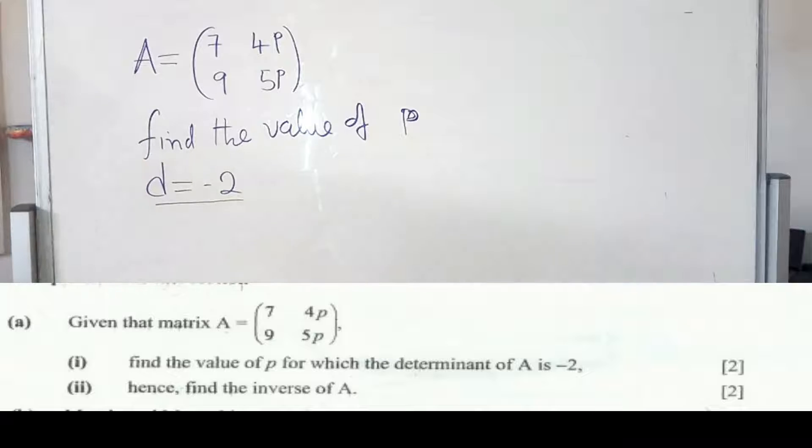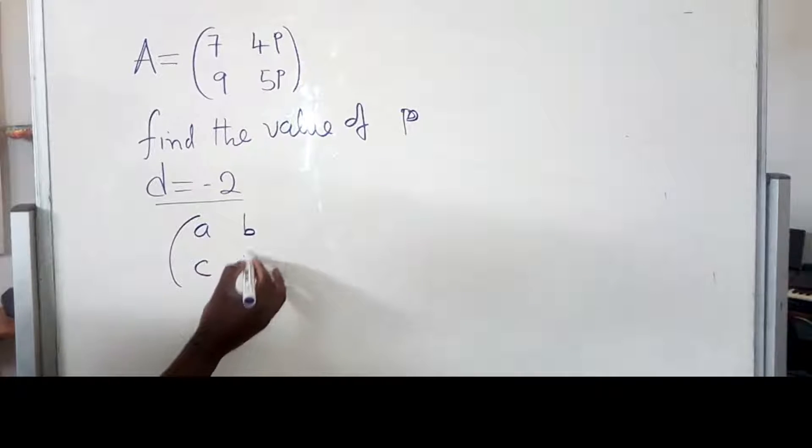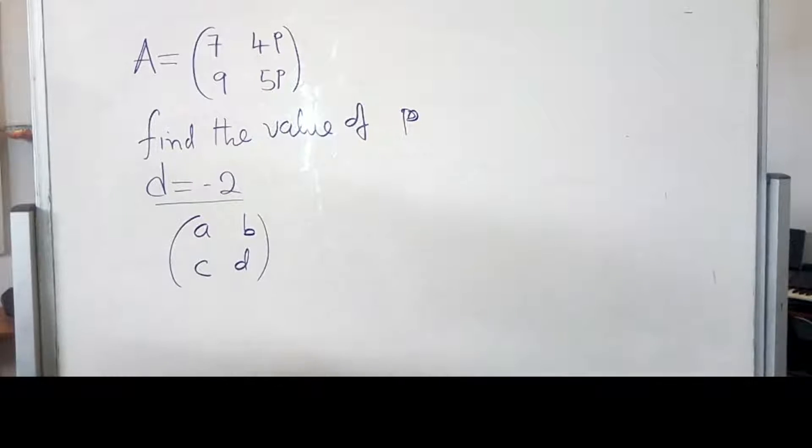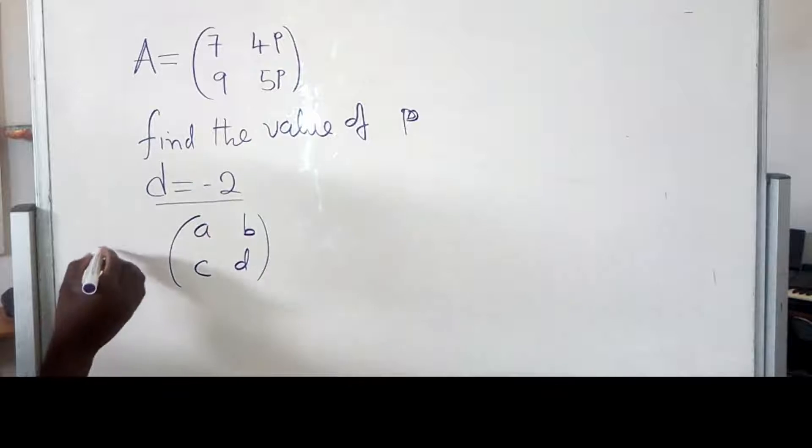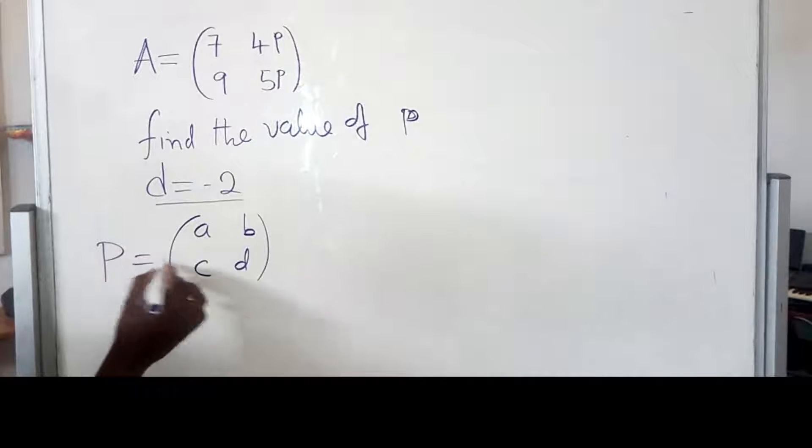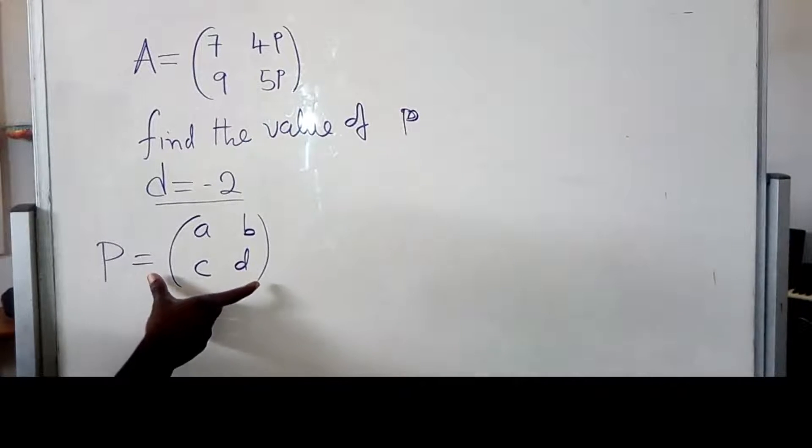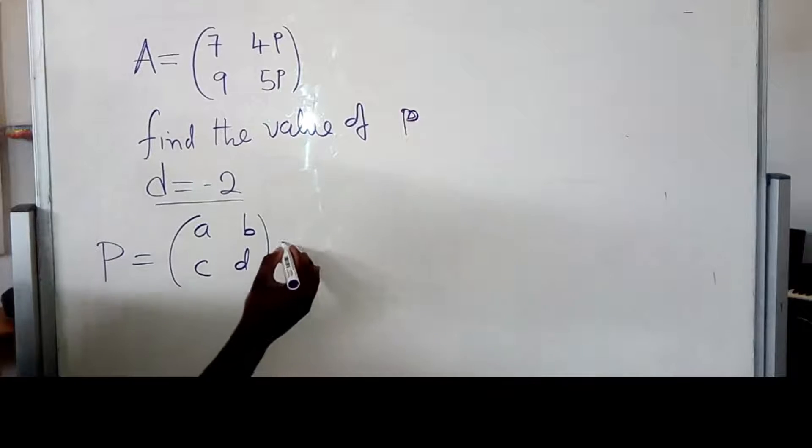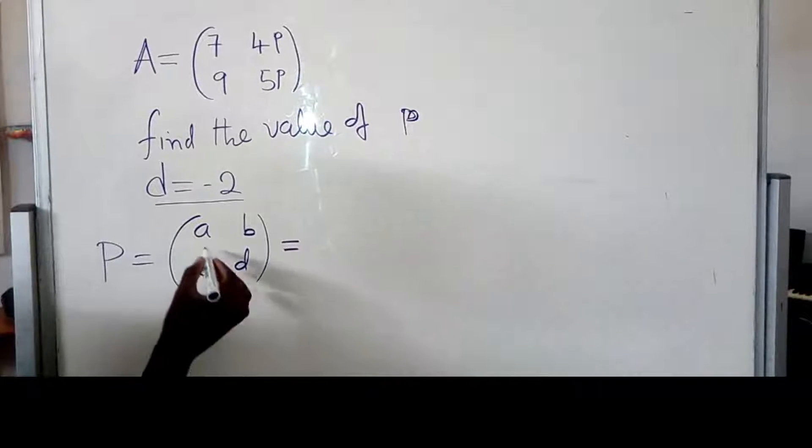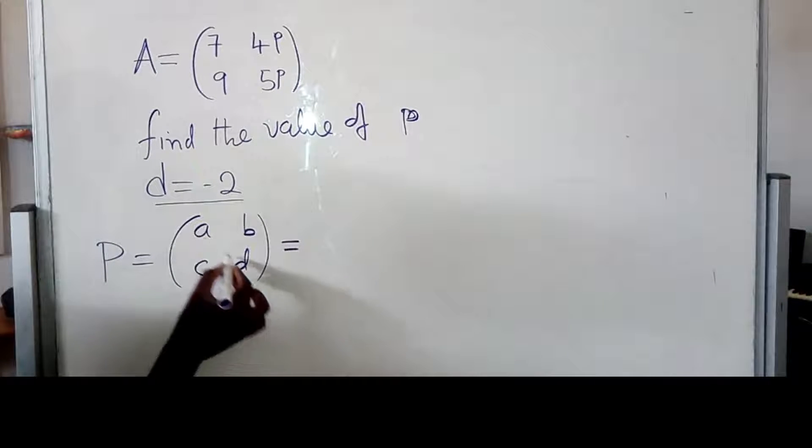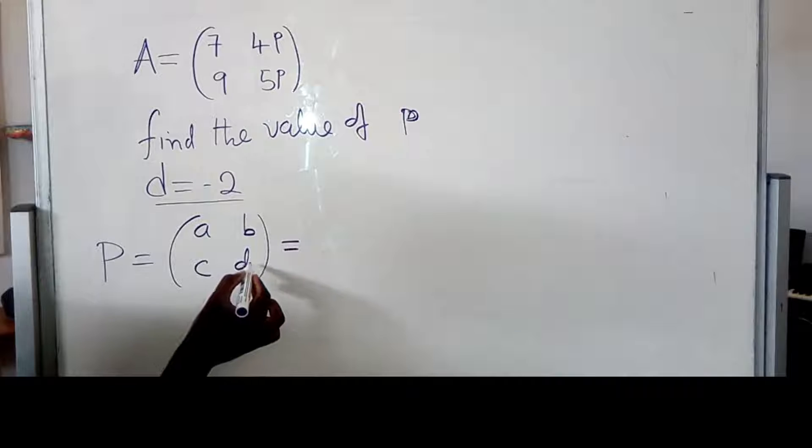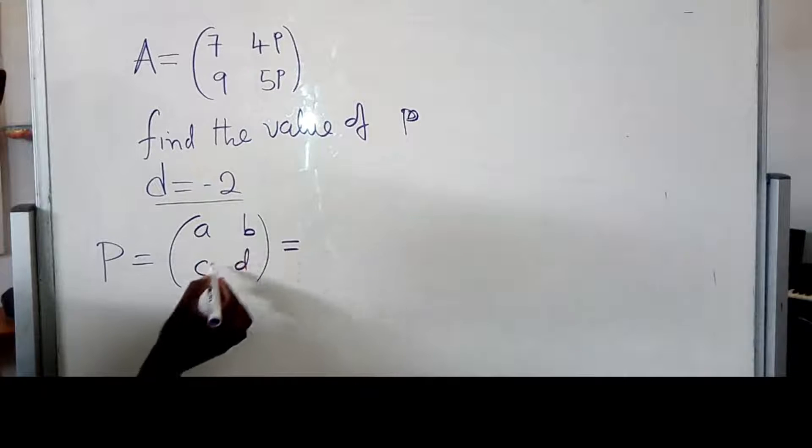Okay. So, when we want to find the value of P, we know that if you have a matrix, this is A, B, C, and D here, and you have been asked to find the determinant of this matrix. Let's say this is matrix P, and then they say find the determinant of matrix P. What you need to do is to multiply the major diagonal minus the multiplication of the minor diagonal.